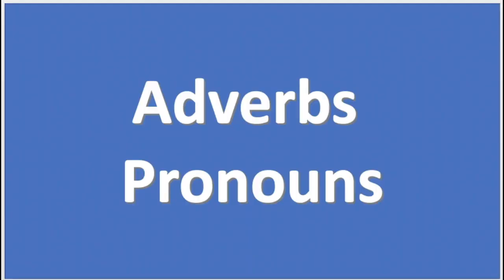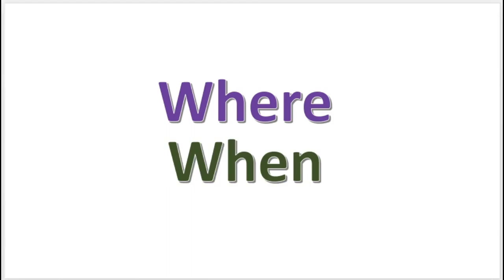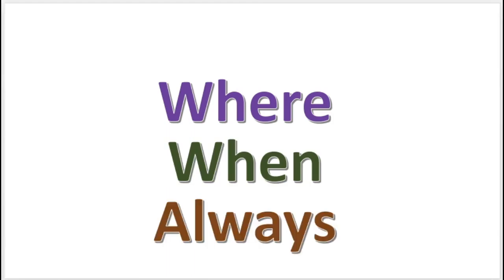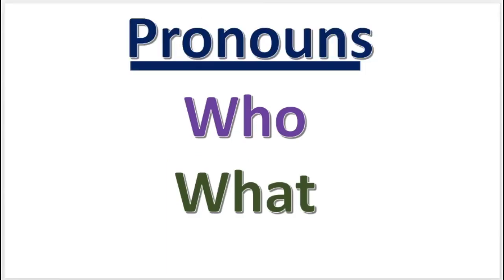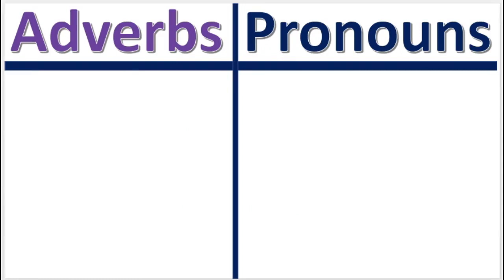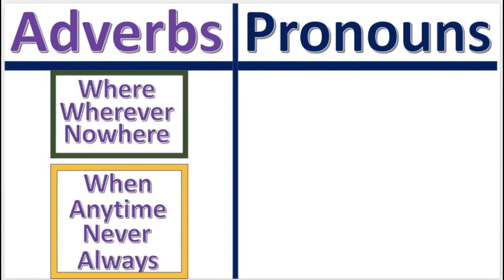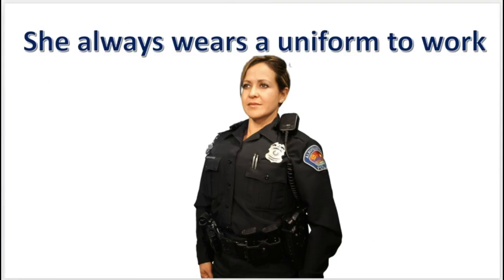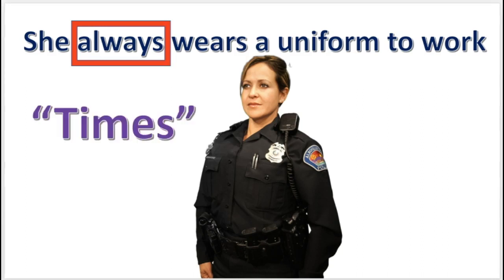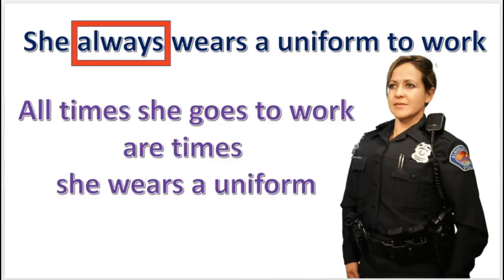The next topic is that of adverbs and pronouns. Words like 'where,' 'when,' and 'always' are adverbs, and words such as 'who' and 'what' are pronouns. These words are translated in terms of places, times, persons, and things. For example, since 'always' is a temporal adverb, we use 'times' to translate it.